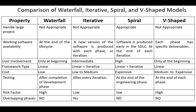Waterfall, iterative, and spiral models are heavyweight models, since they are process and tool-oriented models. They follow a predictive approach involving comprehensive documentation. Lightweight models, such as the agile model, are people-oriented models, following a decentralized approach, which makes them adaptive to changes.